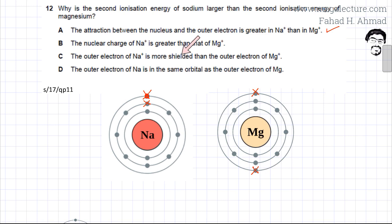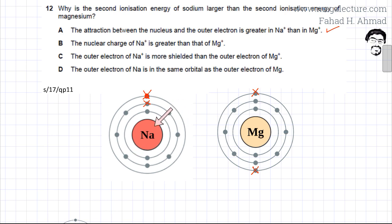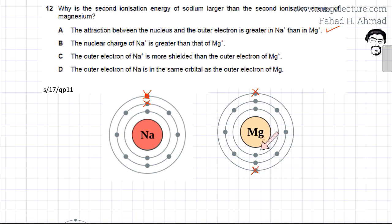Option C states that the outer electron of Na⁺ is more shielded than the outer electron of Mg⁺. In Na⁺, the outer shell is gone after losing one electron, so the inner shell electrons are closer to the nucleus and less shielded — not more. In Mg⁺, after losing one electron the remaining outermost electron has the same number of shells and is more shielded. So option C is incorrect.